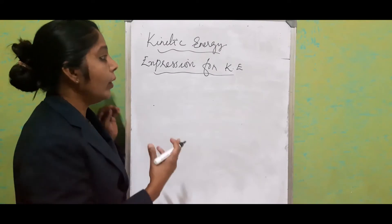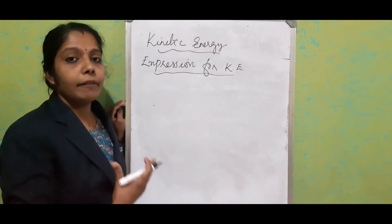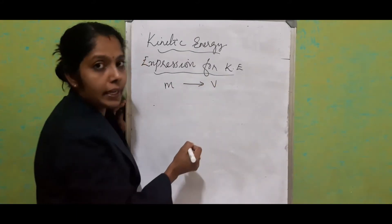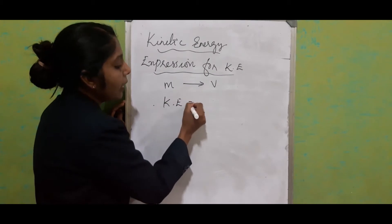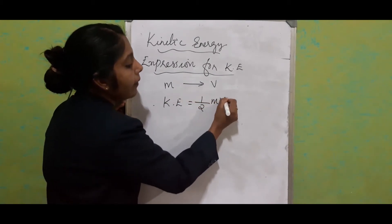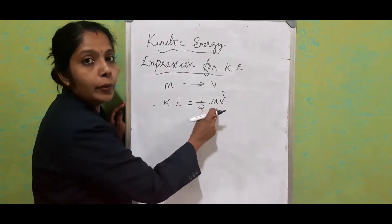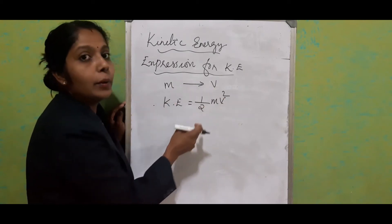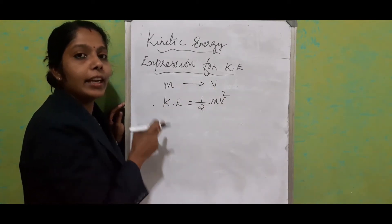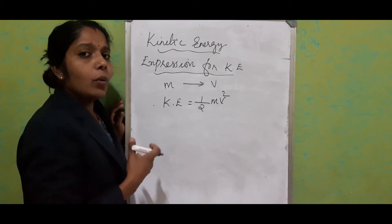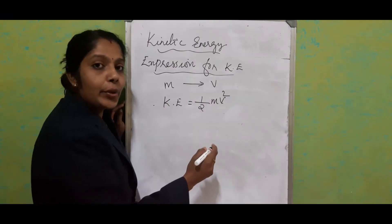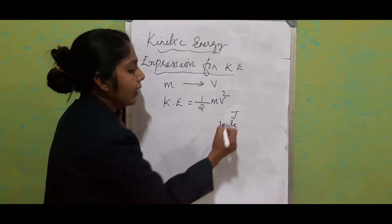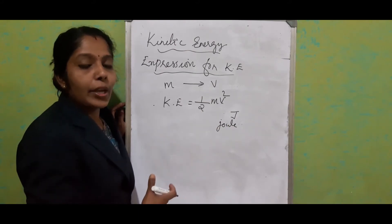Now we will see the expression for kinetic energy. Consider a body of mass M moving with a speed V. The kinetic energy is equal to half M V squared — that is, KE = ½ × M × V². By substituting values in this equation, we can find out the kinetic energy of a moving body. The SI unit of kinetic energy is also Joule.